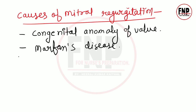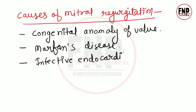तीसरा cause है infective endocarditis। अगर किसी person के heart की सबसे अंदर वाली layer यानि endocardium में infection हो जाए और inflammation आ जाए, तब भी valves properly close नहीं हो पाएंगे और mitral regurgitation देखने को मिलेगा, क्योंकि endocardium की lining valve पर भी पाई जाती है।